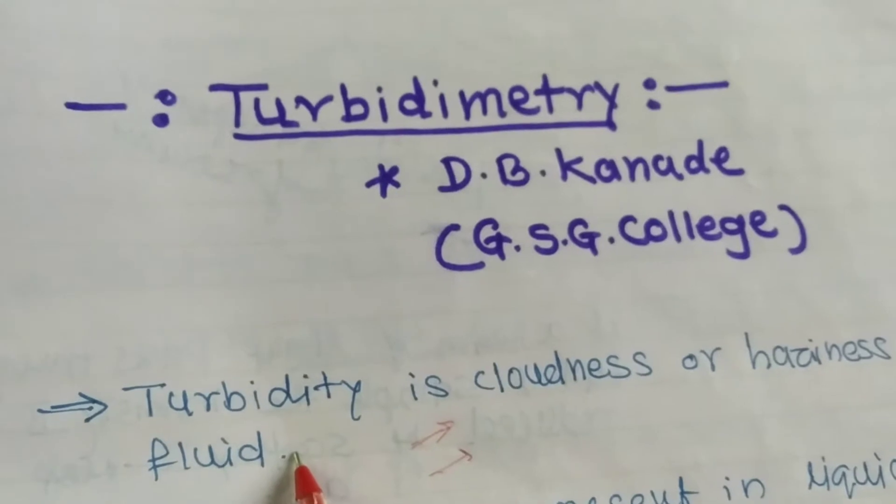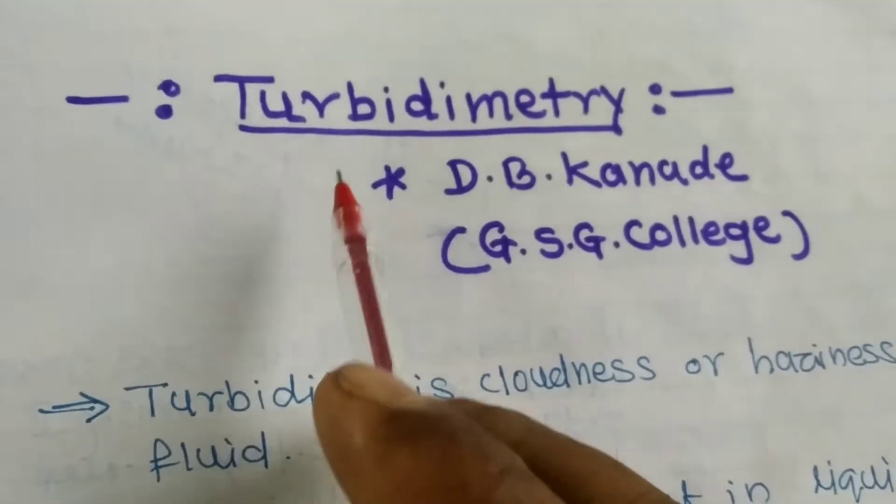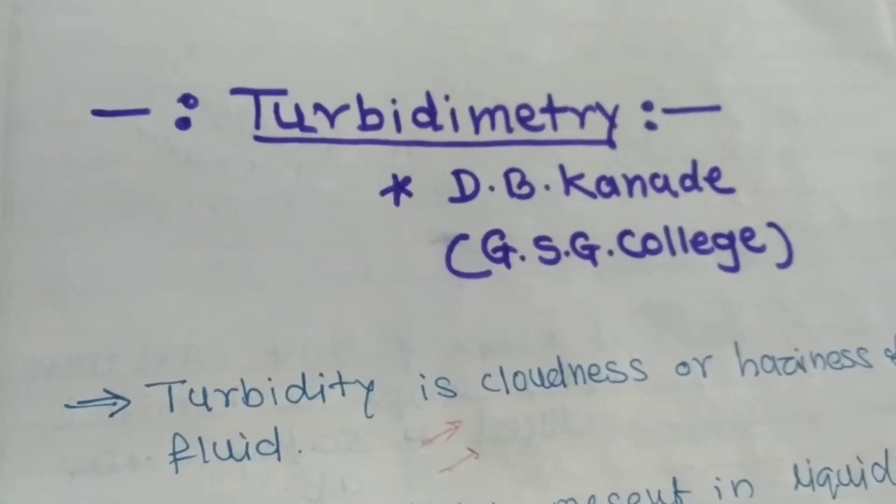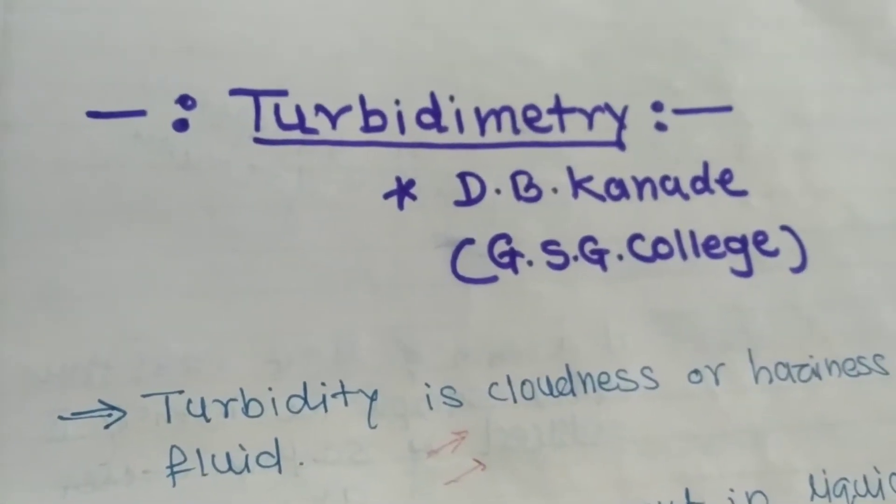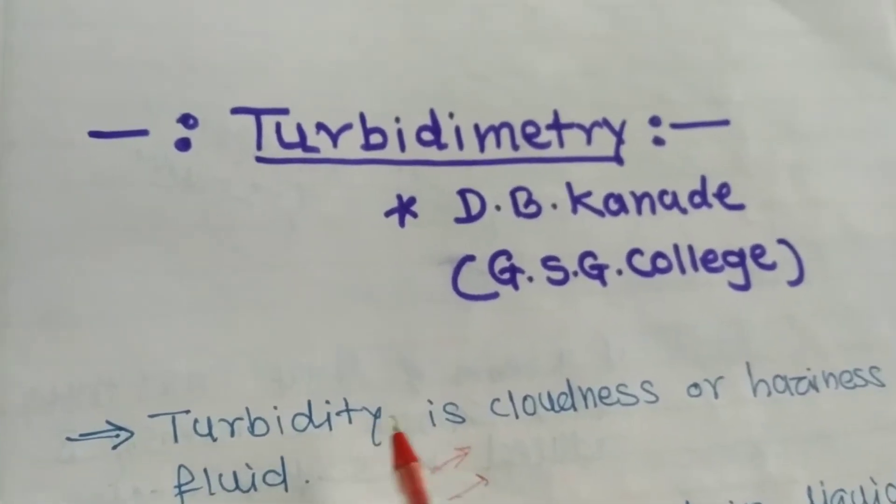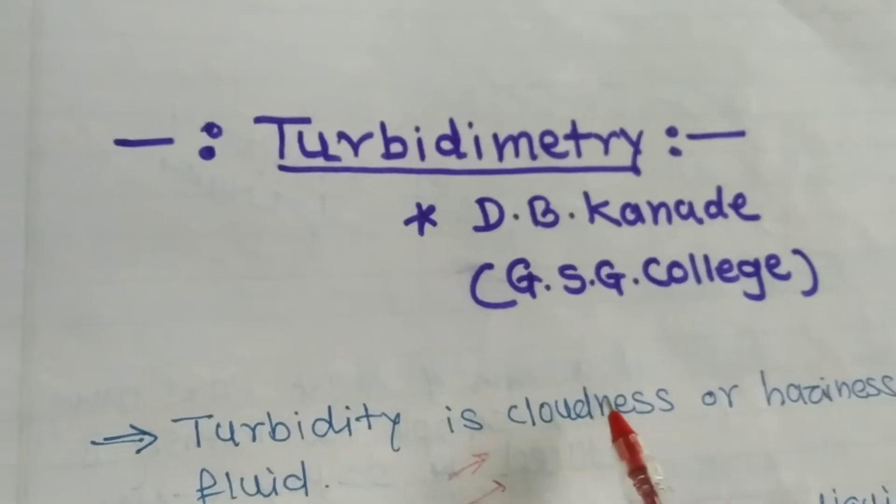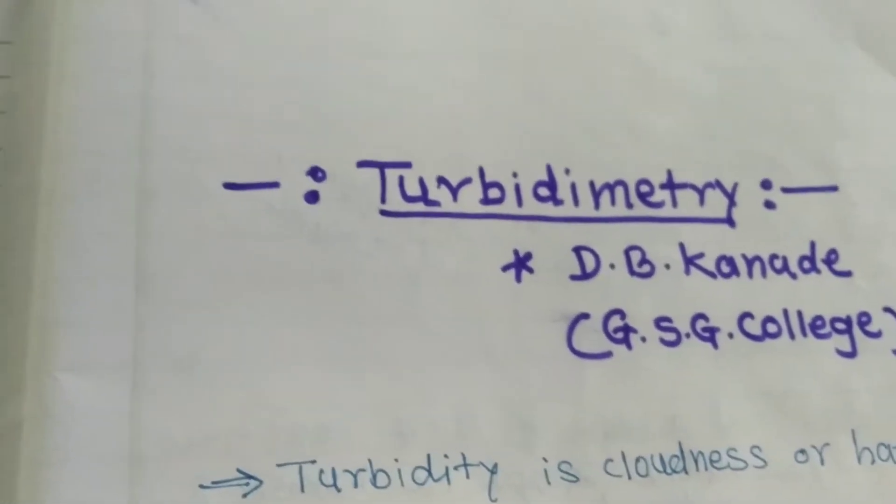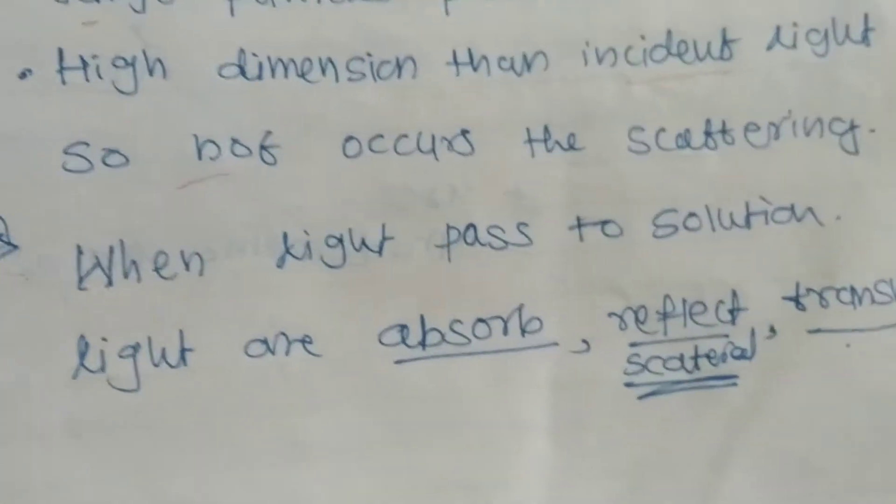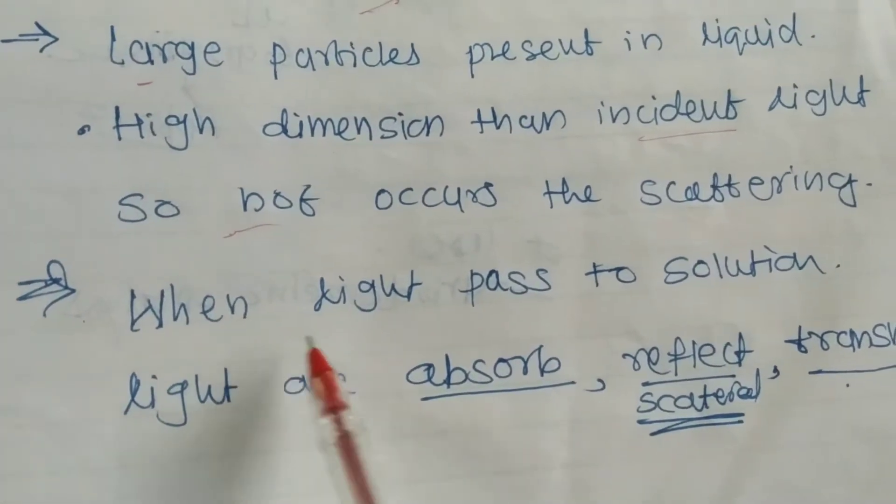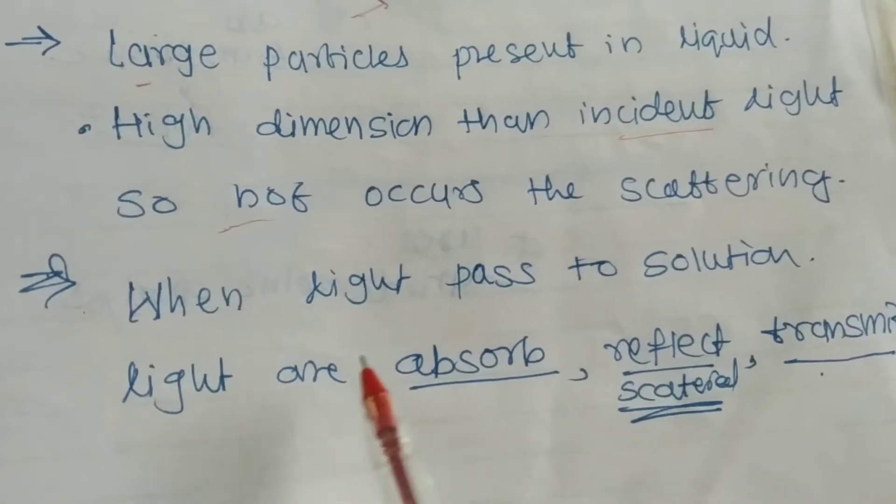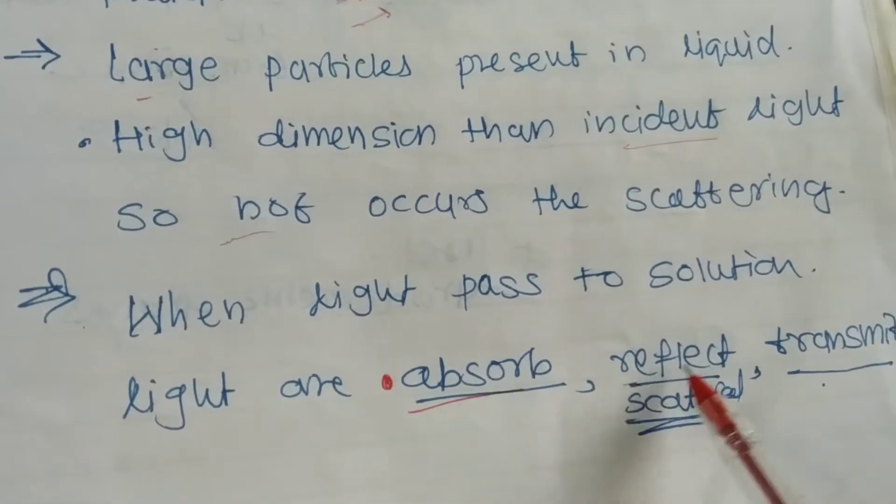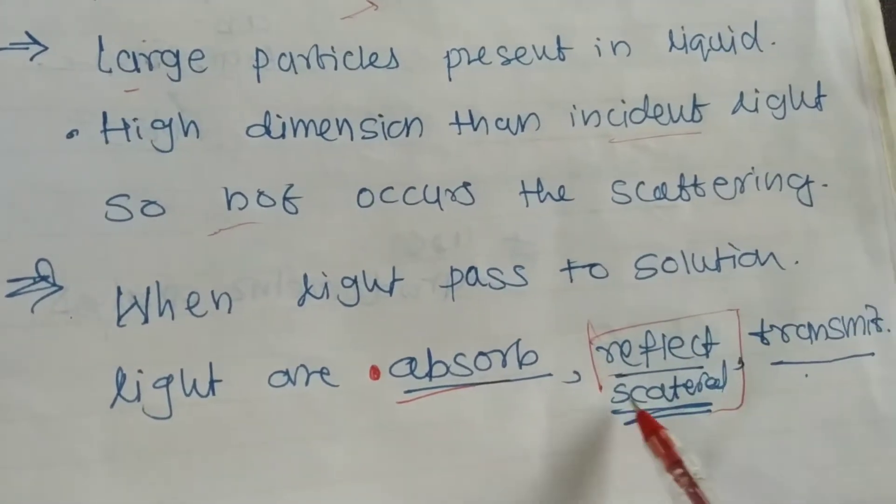We measure turbidity by the instrument known as turbidimetry. When incident light is allowed to pass through a sample, three phenomena occur: first, light absorption takes place; second, light reflection or scattering takes place;